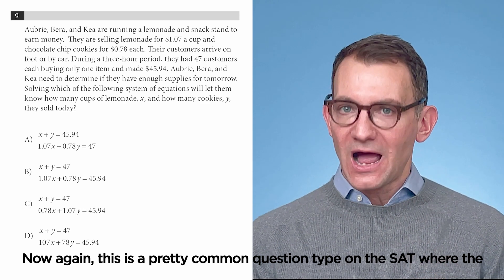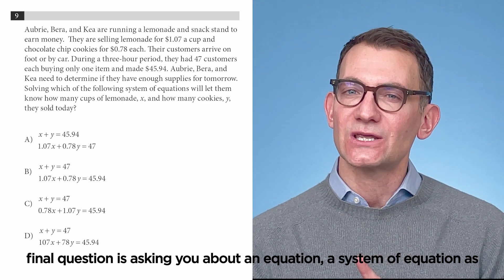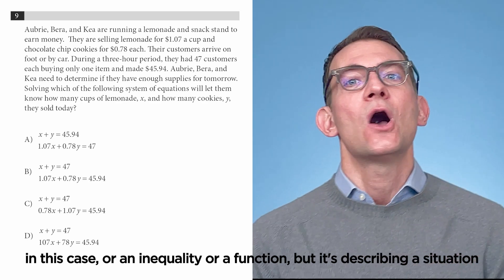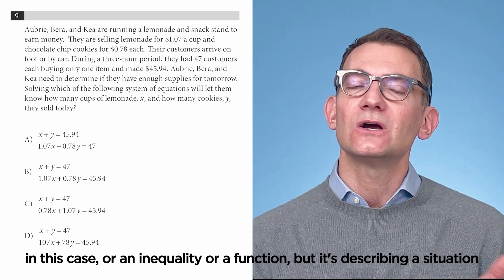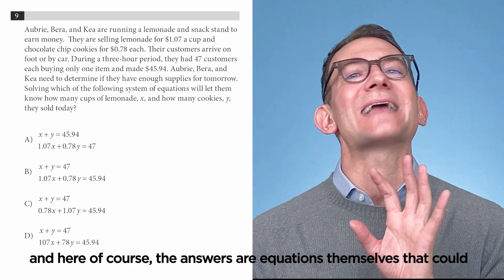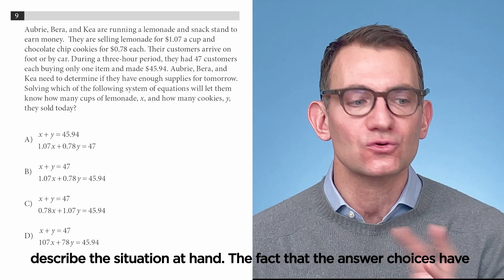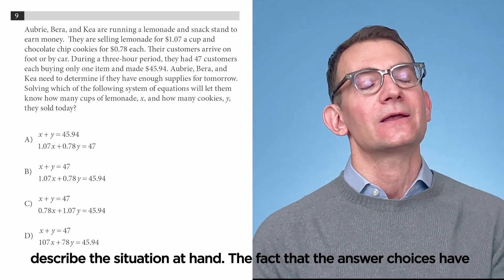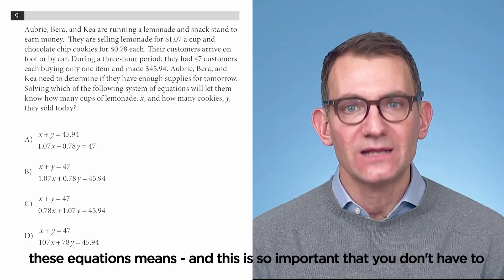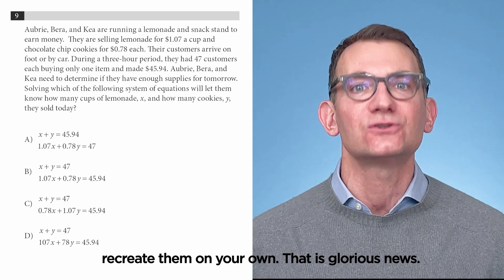Now, again, this is a pretty common question type on the SAT, where the final question is asking you about an equation, a system of equations as in this case, or an inequality or a function, but it's describing a situation. And here, of course, the answers are equations themselves that could describe the situation at hand. The fact that the answer choices have these equations means—and this is so important—that you don't have to recreate them on your own. That is glorious news.